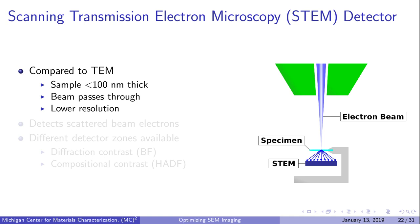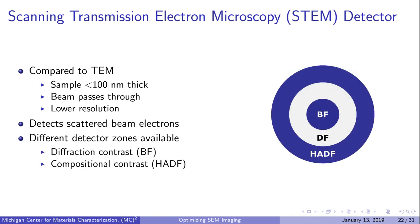Last but not least, we have the STEM detector. STEM in an SEM is similar to TEM in that samples have to be thin—usually less than 100 nanometers—and the beam passes through the sample. Due to voltage limitations, STEM in an SEM is often lower resolution compared to TEM, though it is capable of resolving nanometer-scale features. The STEM detector uses scattered electrons to generate an image. Most STEM detectors are divided into concentric segments: the center segment is bright field, which detects electrons scattered the least and shows the most diffraction contrast. The middle zone is dark field, and the outer zone is high angle dark field. Heavier elements scatter electrons to a higher angle, so the high angle dark field zone provides the most compositional contrast.